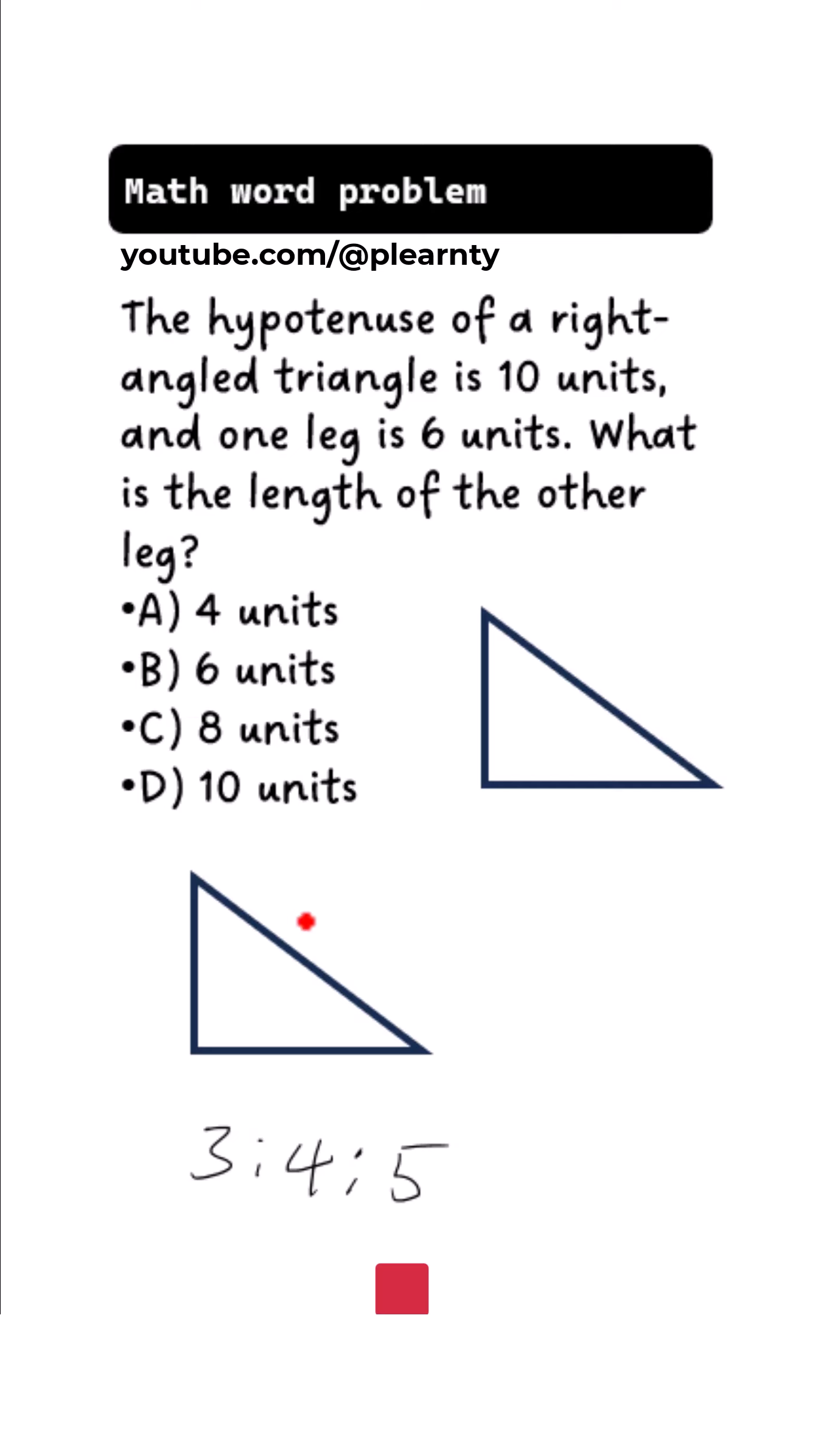First of all, when you have the ratio of these two legs, if you have it to be, let's say, 3 ratio 4, automatically the hypotenuse is going to be 5. So let's say you don't have this value,